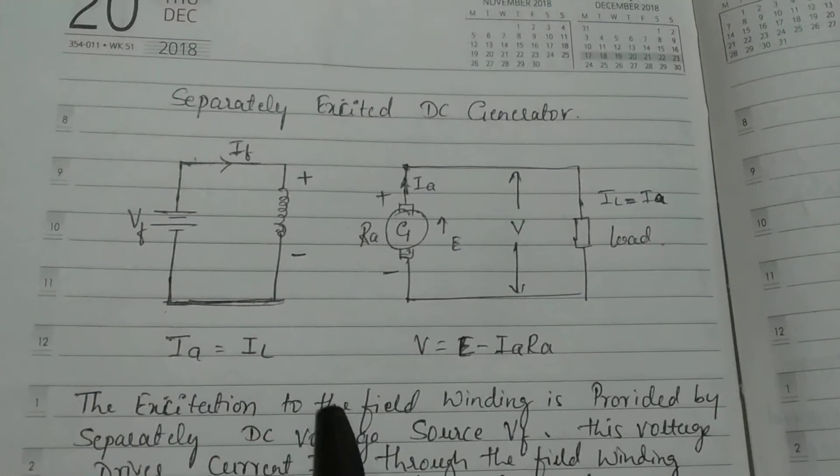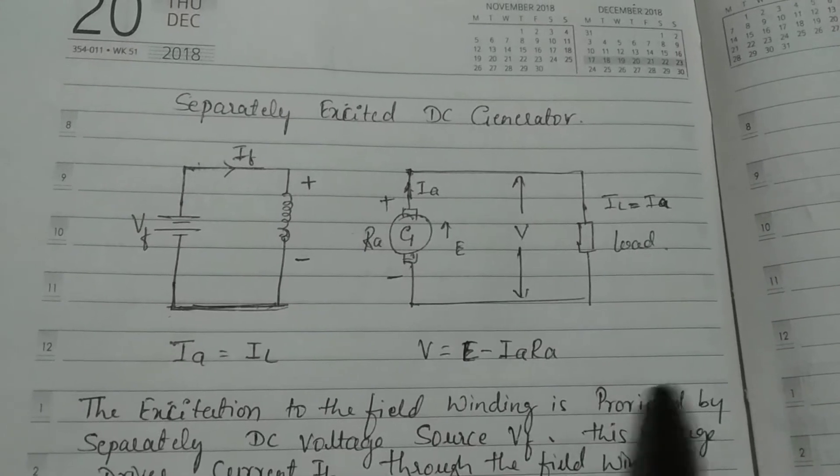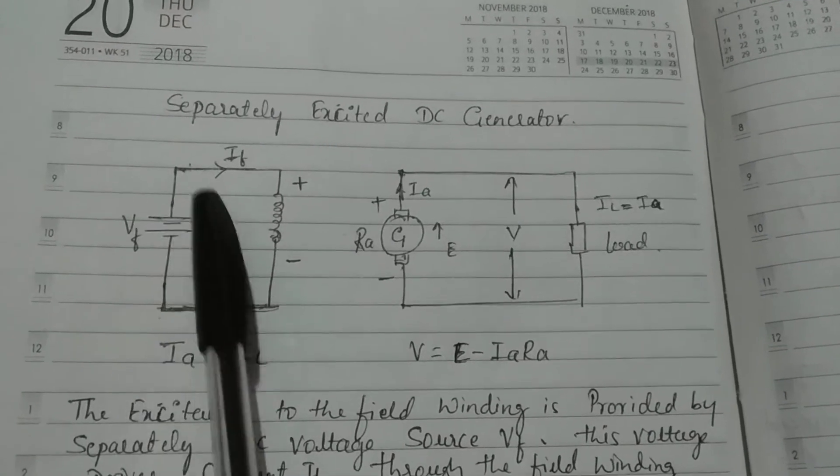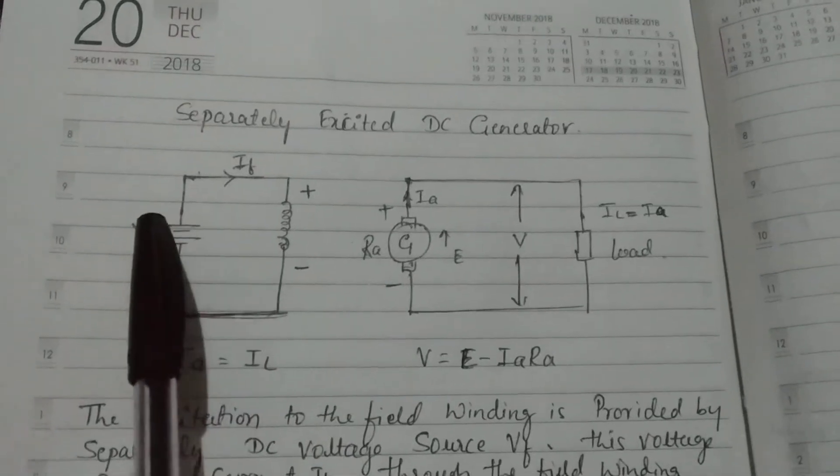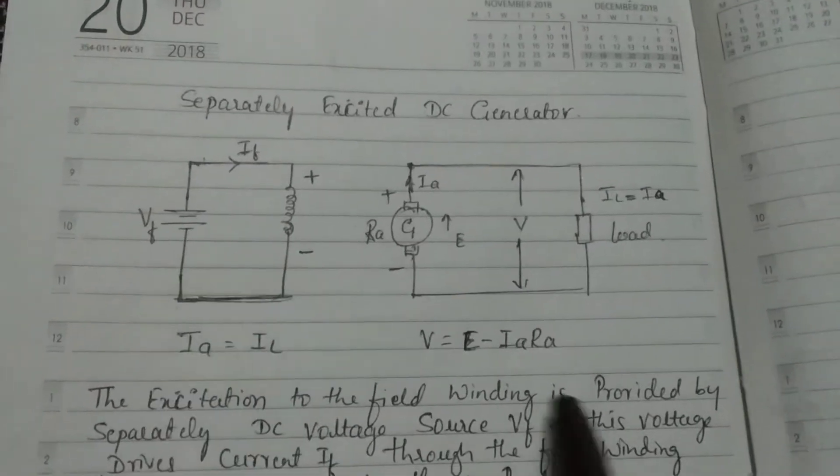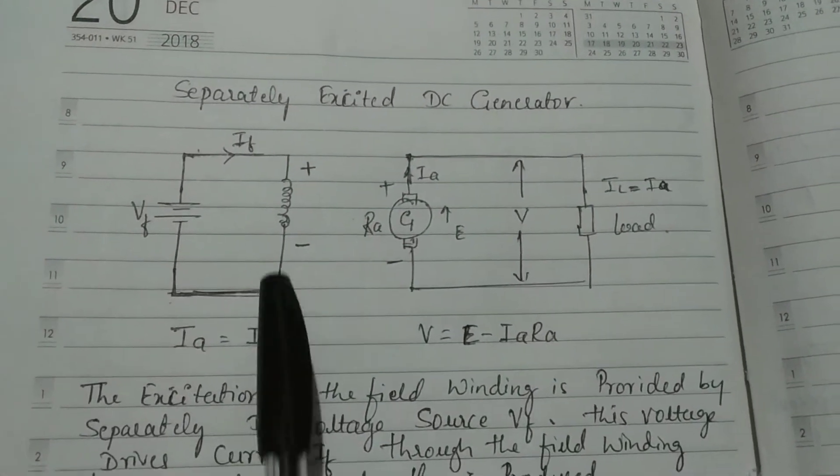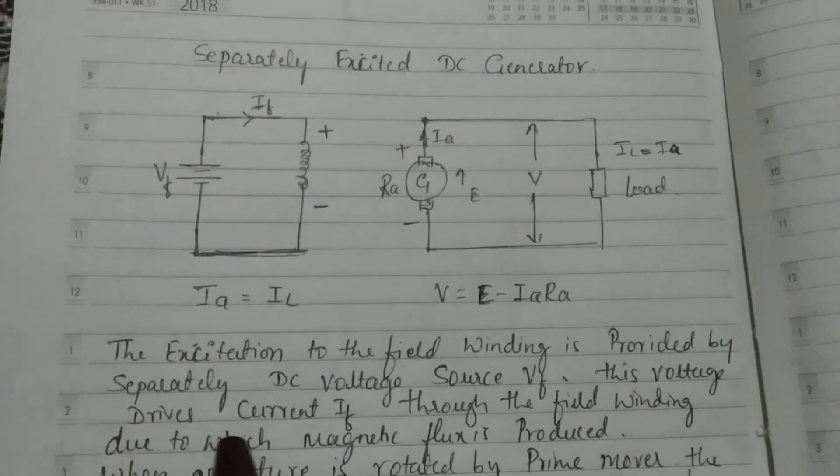The excitation to the field winding is provided by a separate DC voltage source VF. This voltage drives current If through the field windings, producing magnetic flux.